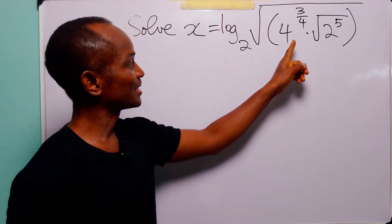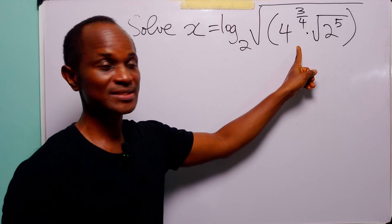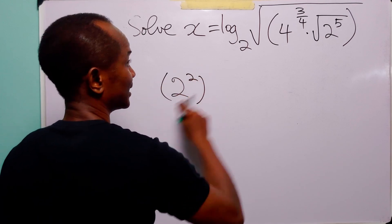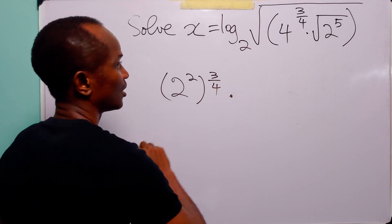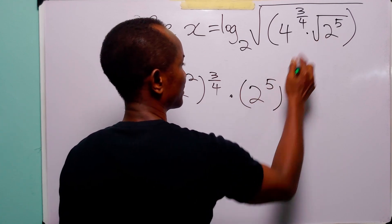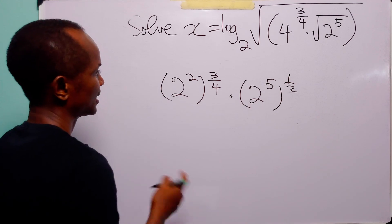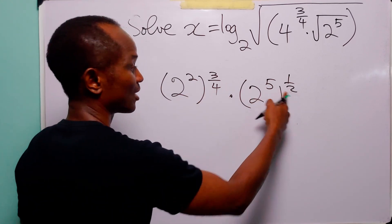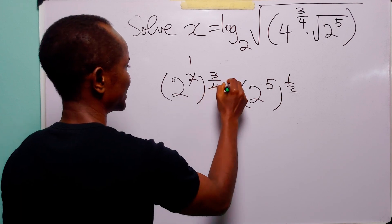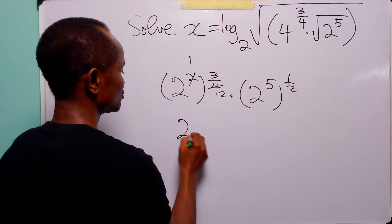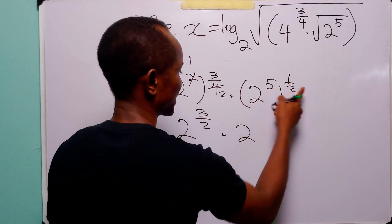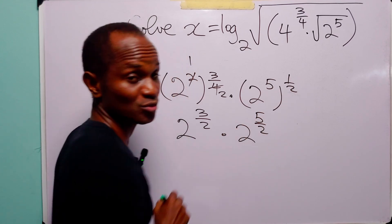Hello and welcome. To solve this problem, let us start by simplifying the numbers under the square root sign. We know that 4 is the same as 2 squared, and we have 3 over 4. This can be written as 2 to the power 5 to the power half, because of the square root sign. Remember that when we have two powers like this, all we have to do to remove the bracket is to multiply the powers. Here 2 can go into itself once and into 4 twice, so we have 2 to the power 3 over 2.